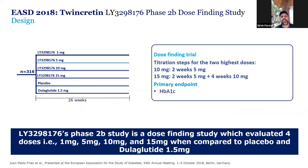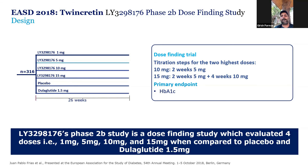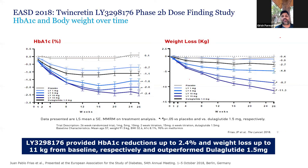This study was presented at EASD 2018 and was a phase 2 dose-finding study. This molecule — GLP-GIP — was used at different doses compared with dulaglutide as well as placebo. Since this was a dose-finding study, different doses were studied: 1mg, 5mg, 10mg, and 15mg respectively, compared to placebo and dulaglutide used as 1.5mg once-weekly dosing. These were type 2 diabetic patients who were uncontrolled.